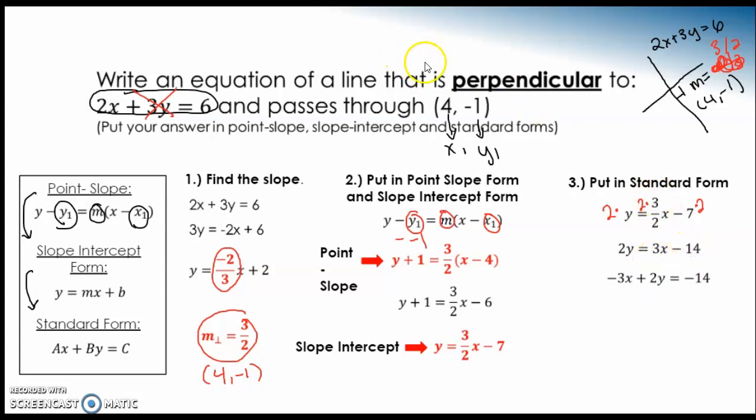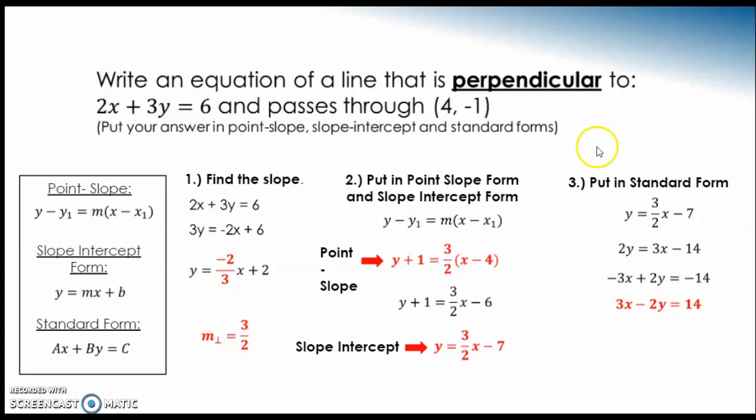Well, now let's move that 3x over to the other side. So we have negative 3x plus 2y equals negative 14. Notice x is first, but x is not positive. We need to make it positive. So I have to divide every single solitary piece by negative 1. Once I do that, I get 3x minus 2y equals 14.